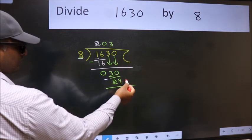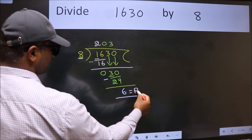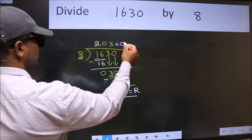No more numbers to bring down, so we stop here. This is our remainder and this is our quotient.